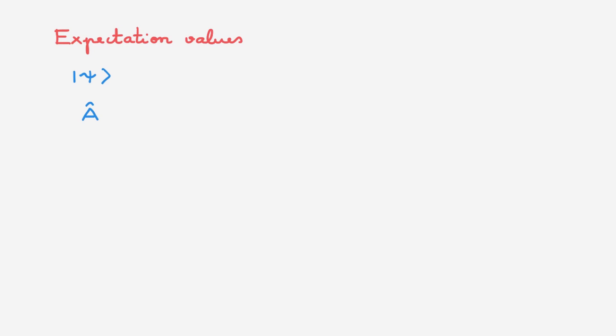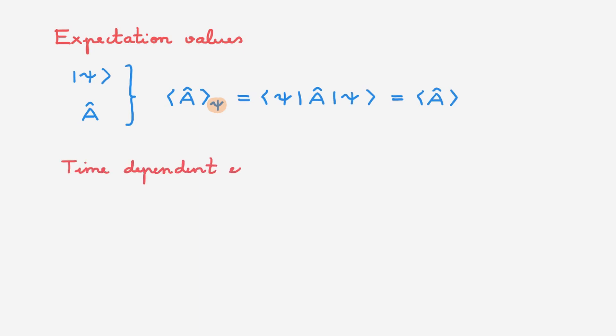Our starting point are expectation values. The necessary ingredients are the state of the system psi and some observable A. The expectation value of A in state psi is written like this and is equal to the bra psi, the operator A, and the ket psi. If we're only calculating the expectation value of the same state psi and there's no possible confusion, we'll omit this subscript and simply write the expectation value of A in state psi like this. The expectation value is a number that describes the average of the probability distribution of state psi when written in the basis spanned by the eigenstates of operator A.